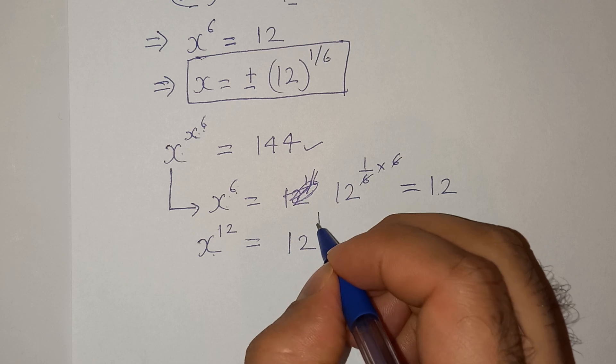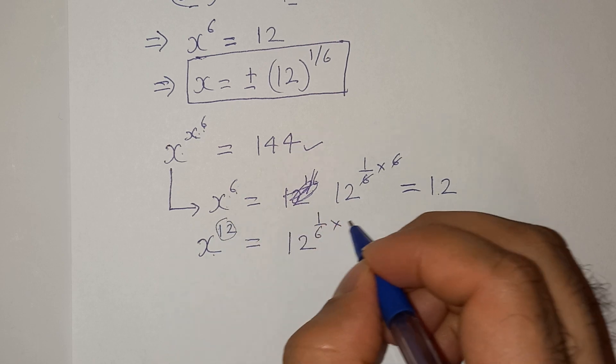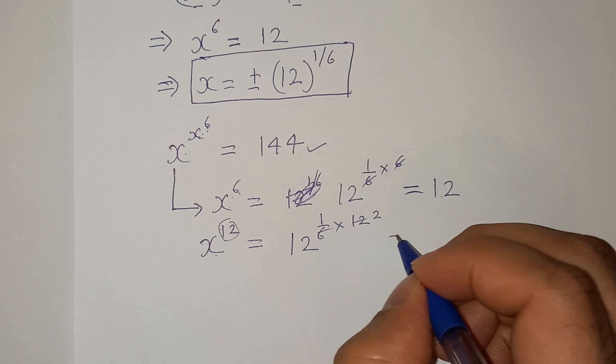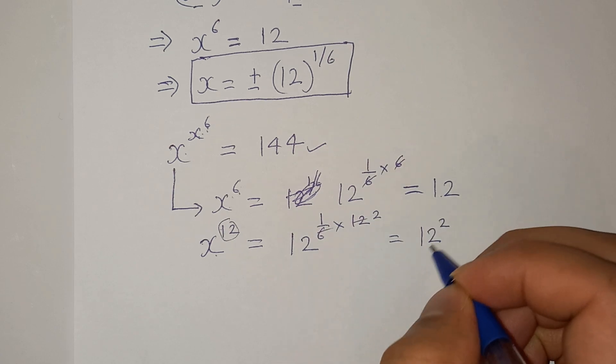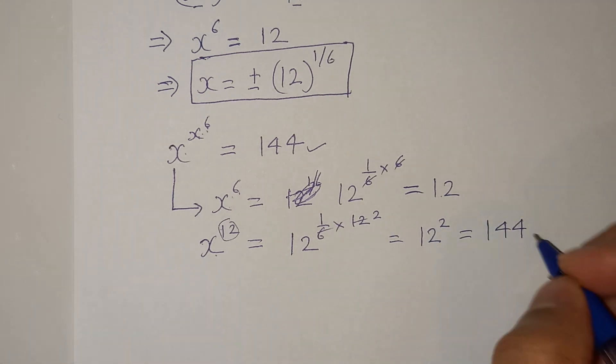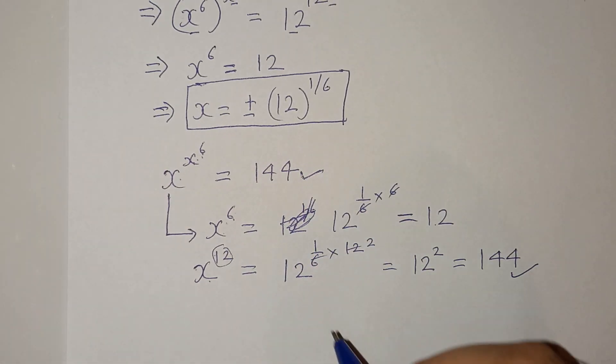So 12^(1/6) multiplied by this 12. So this will be 2. So 12². The value comes out to be 144, and this is the value which we can match with this 144.